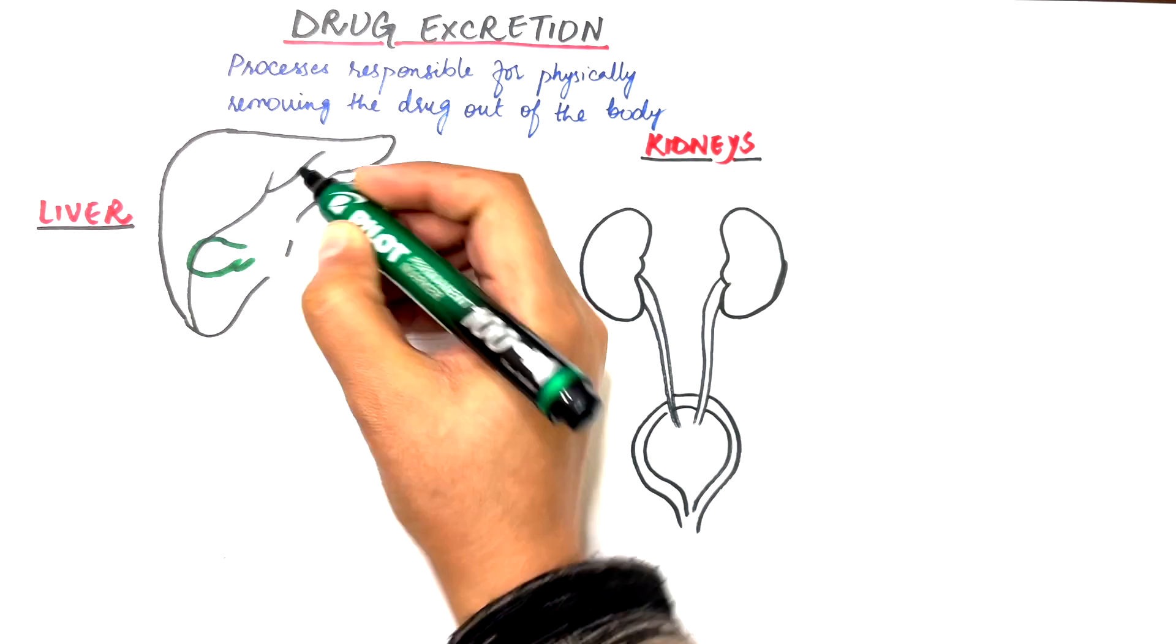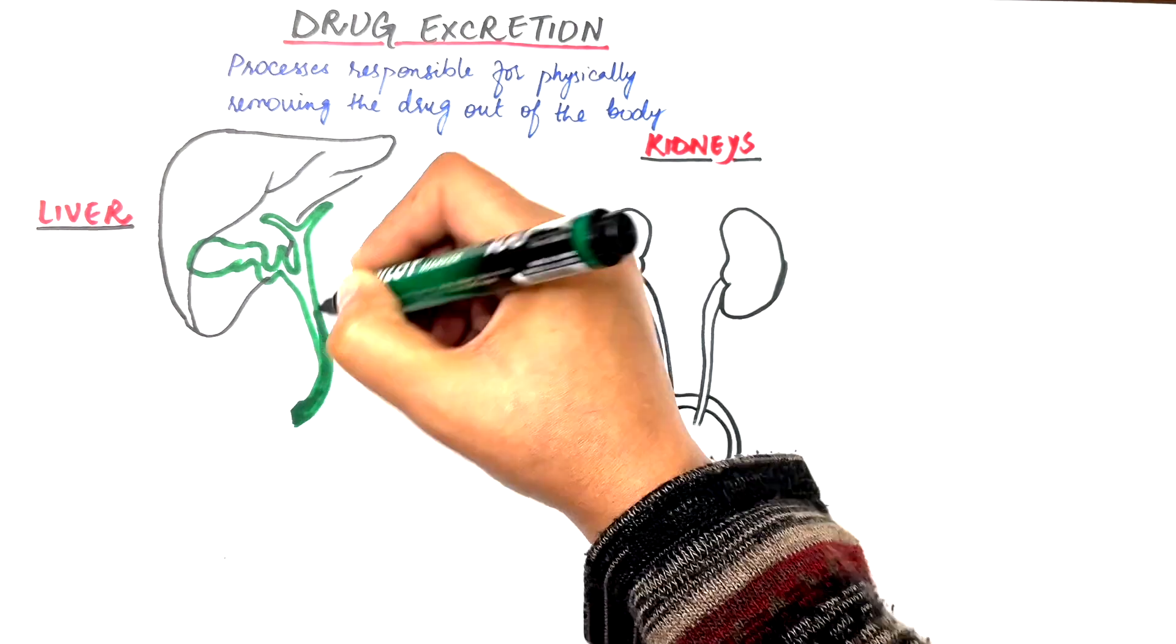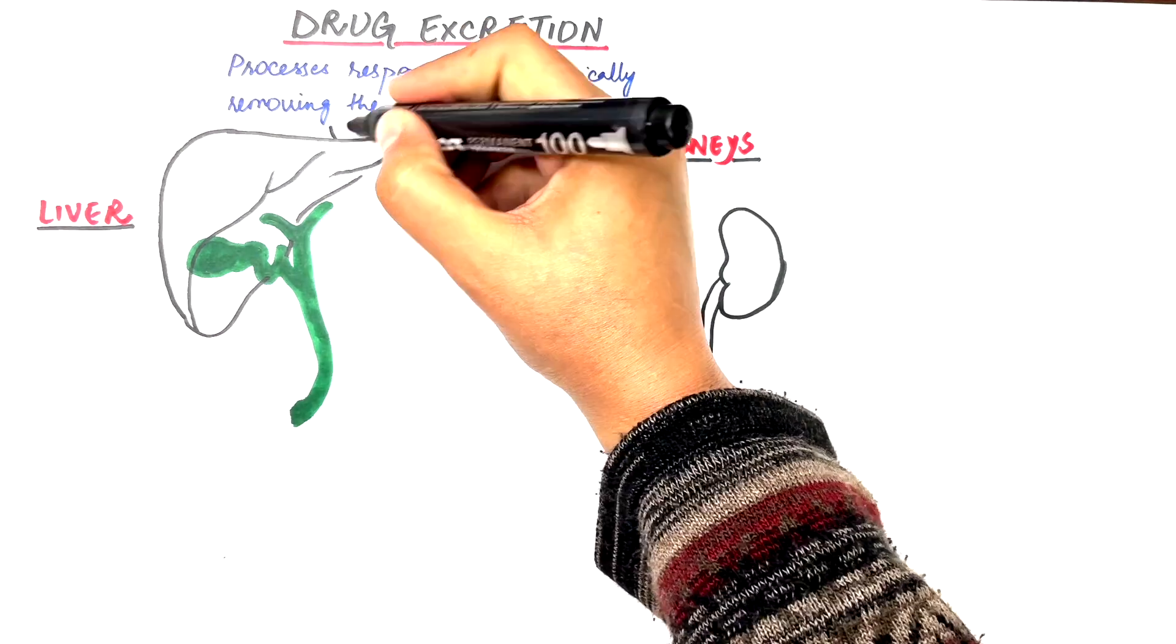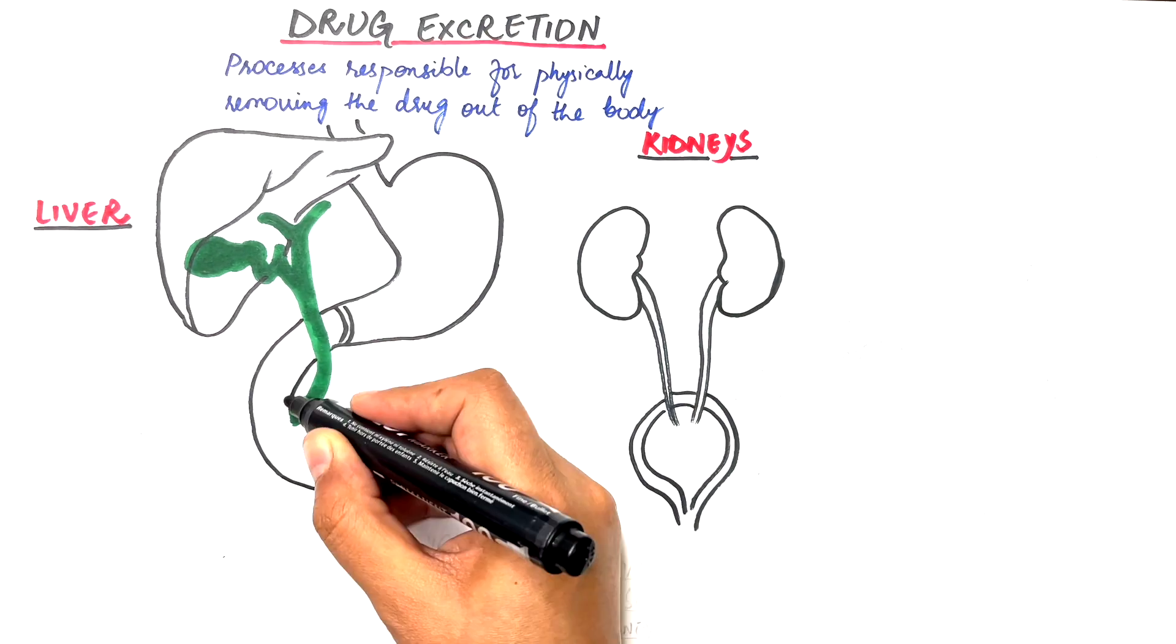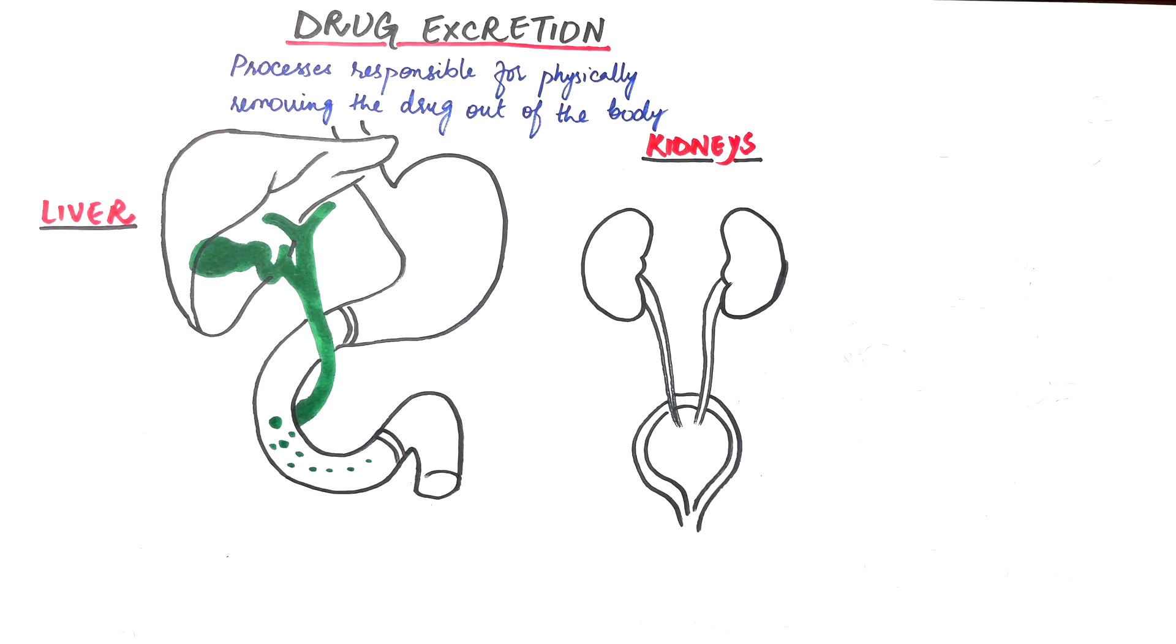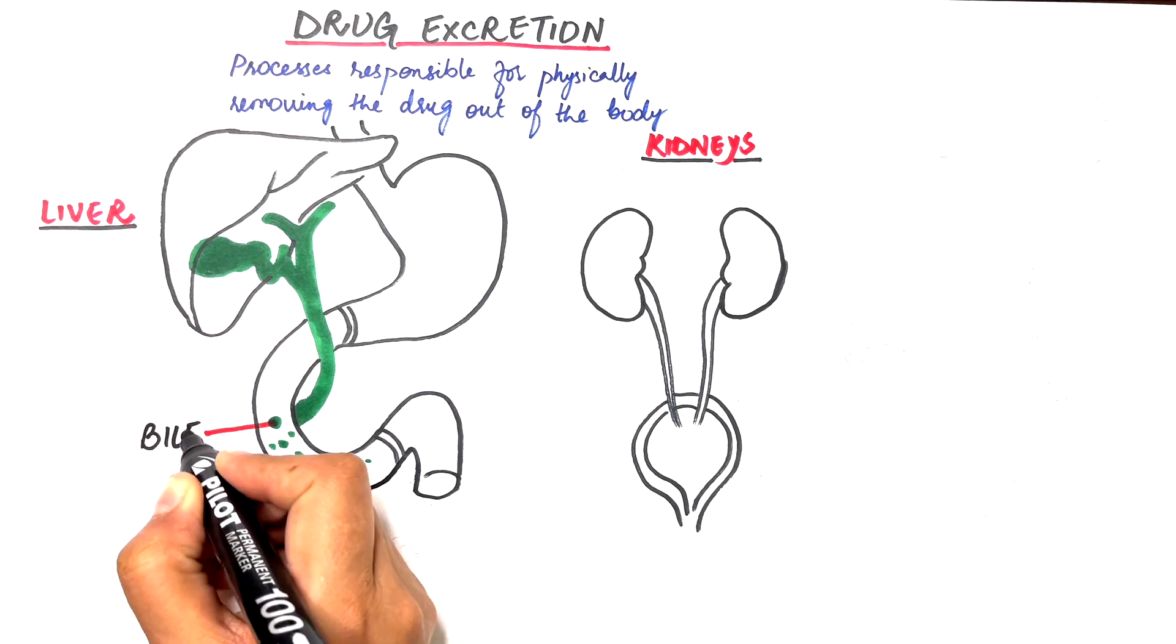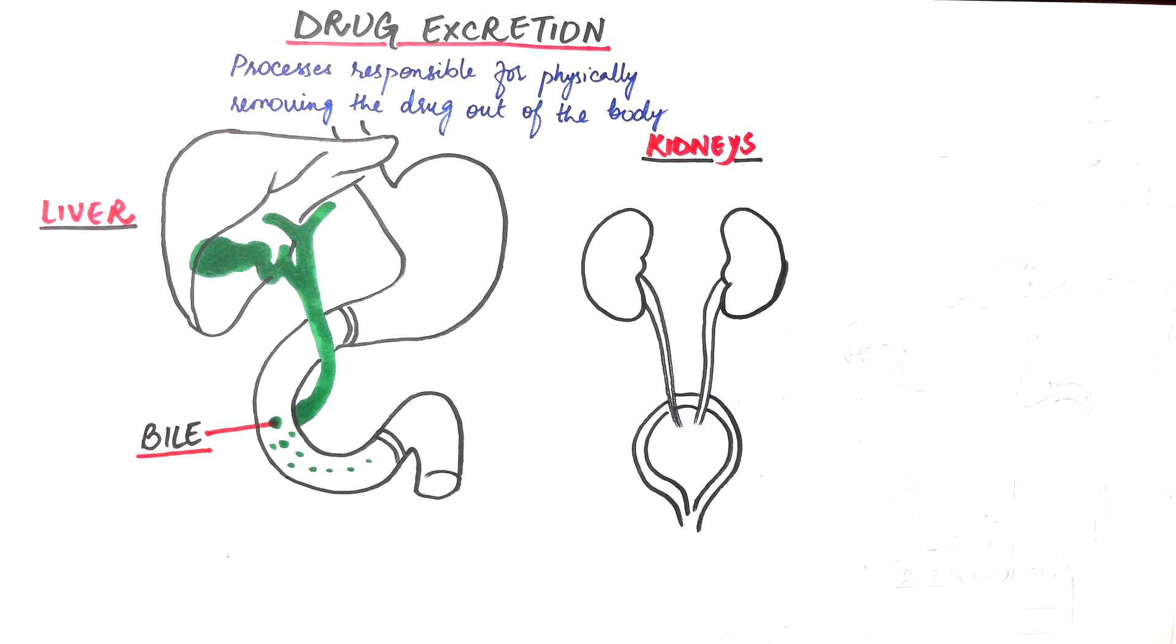Drugs entering the hepatic circulation may also enter the bile which is then excreted into the duodenum and small intestine. Depending on the chemical properties of the drug, if the drug is not hydrophilic or polarized enough, it may then reabsorb from the small intestine back into the blood circulation. This is known as enterohepatic recycling.